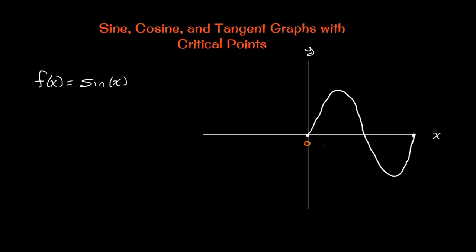It takes 2π radians for sine to make one complete revolution. 2π is also synonymous with the term period. Taking 2π divided in half gives us π, which is halfway through the first period. Halfway between 0 and π is π/2. And halfway between π and 2π — that is, between 180° and 360° — is 270°, also known as 3π/2. So a critical point exists at every π/2.